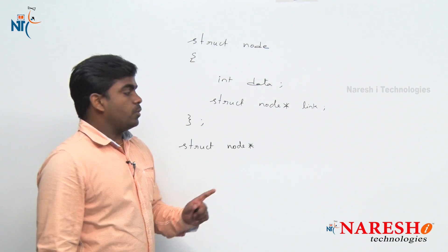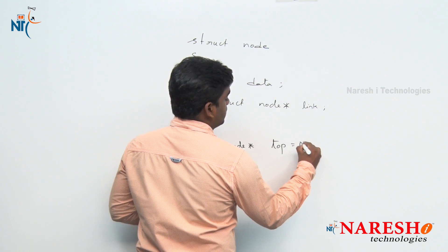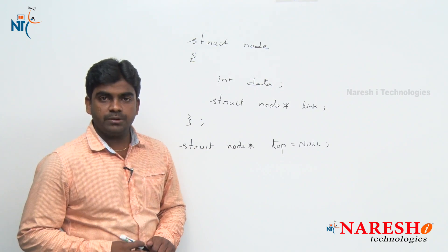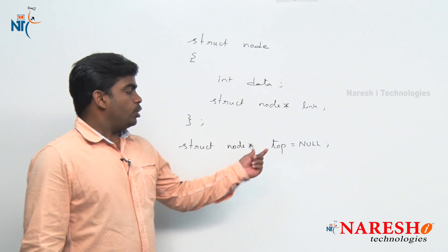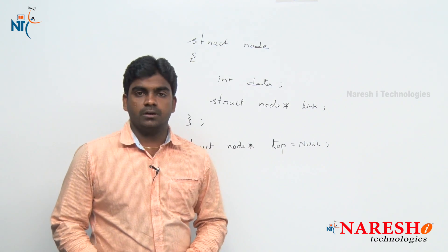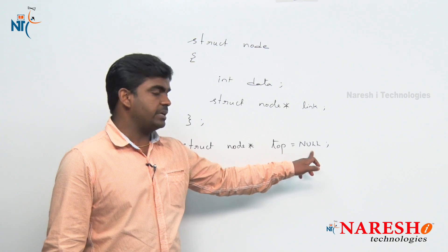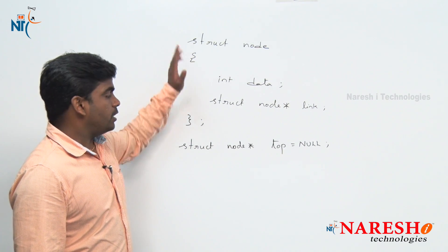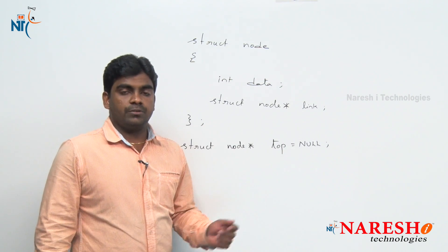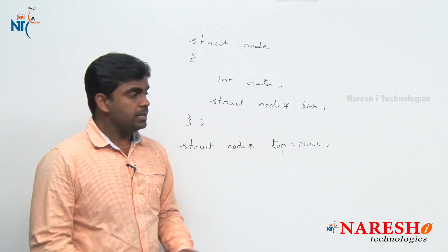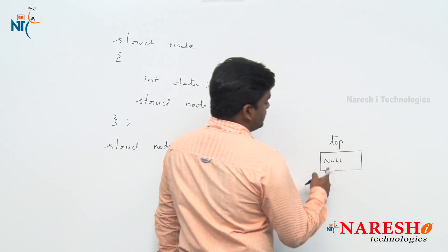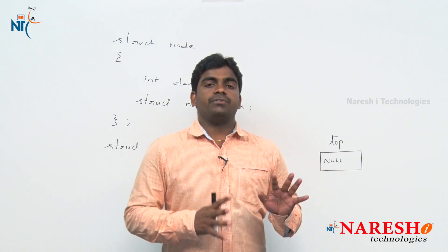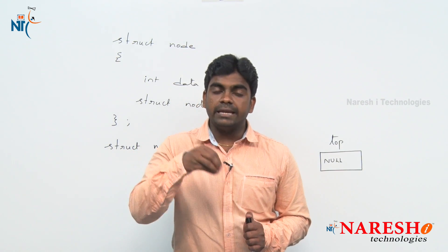We declare one variable of struct node type. All the operations in the stack we should perform with the help of a top variable. The top variable is a pointer variable with initial value null. Generally we declare this as a global variable - a global pointer variable's default value is null. If you want to show it explicitly, you can specify null here. This is the node declaration and definition, and the top variable gets memory allocation at some location and is initialized with null.